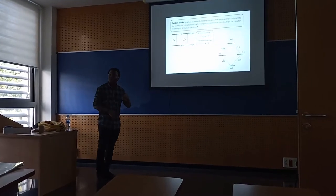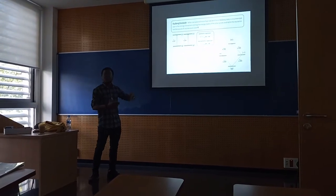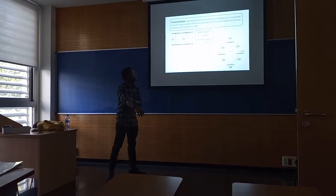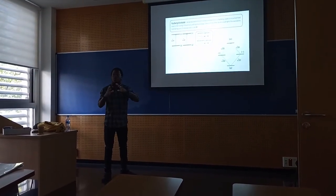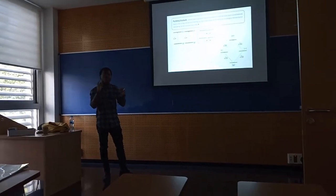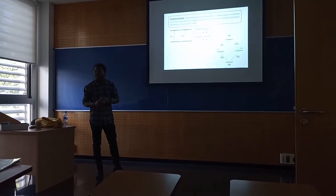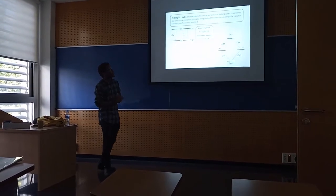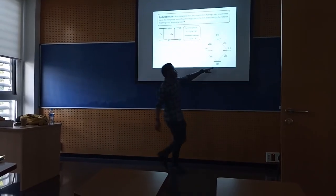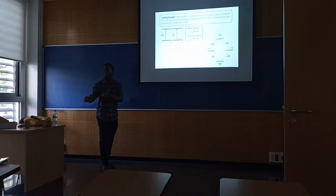The Rydberg blockade is when the excitation of more than one atom to the Rydberg state is avoided due to the strong interaction between these systems, thereby shifting the energy state of the other atoms to be off-resonance with the excitation field. For example, consider two atoms. Their computational basis can be written as: GG, where both atoms are in the ground state; RG or GR, where just one atom is excited to its Rydberg state; and RR, where both atoms are excited to the Rydberg state. The Hamiltonian can be diagonalized to four states: the ground state, the doubly-excited Rydberg state, and the symmetric and anti-symmetric Bell states.